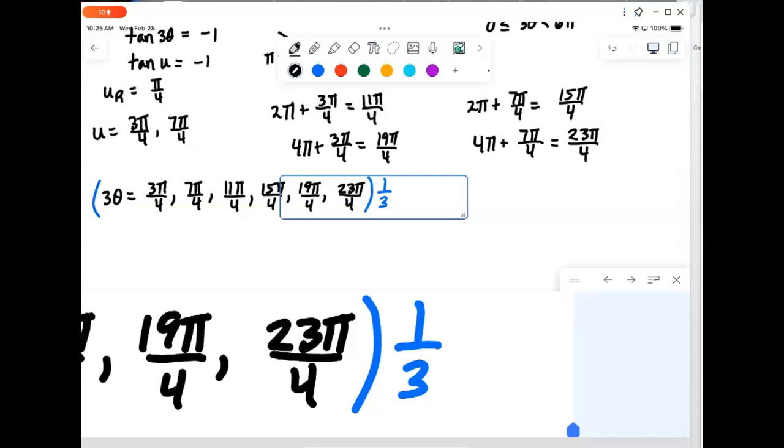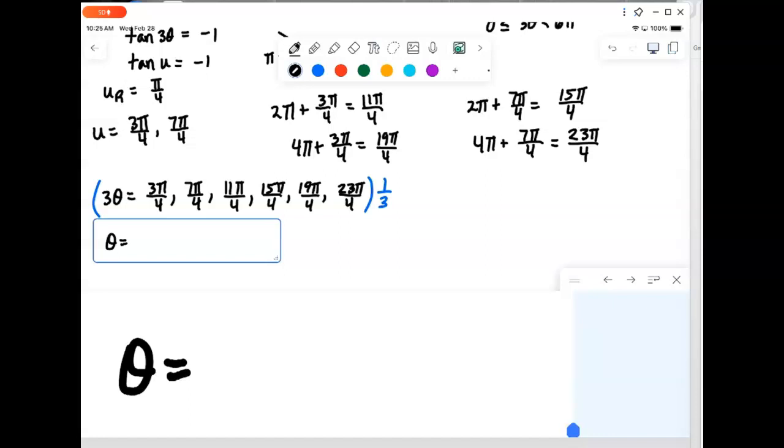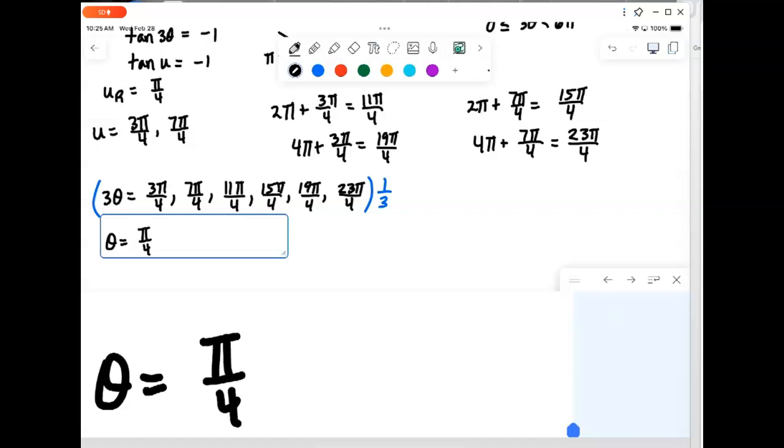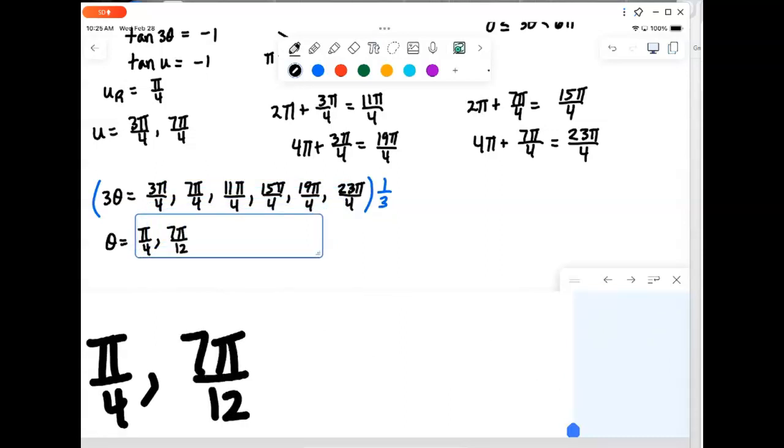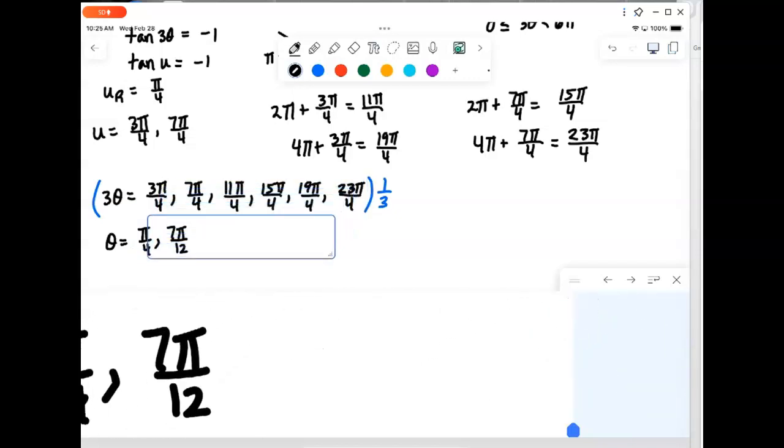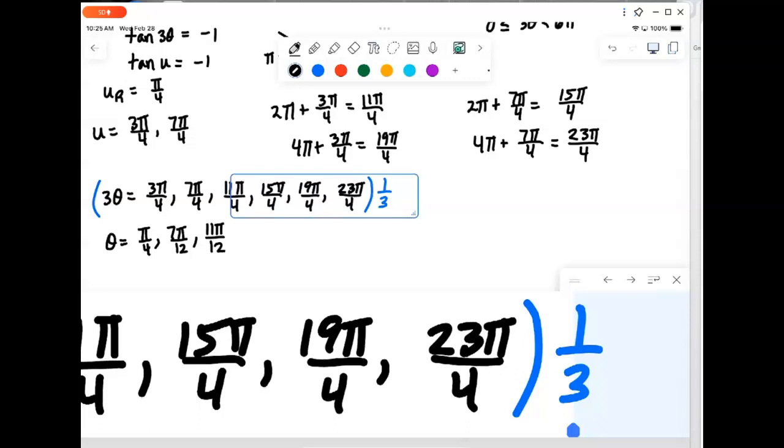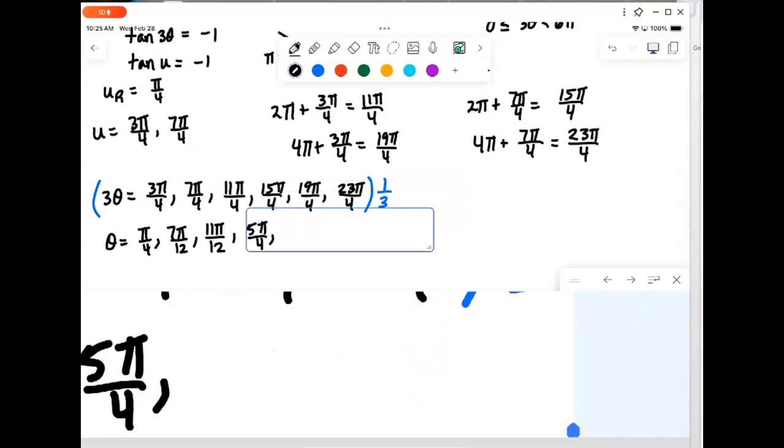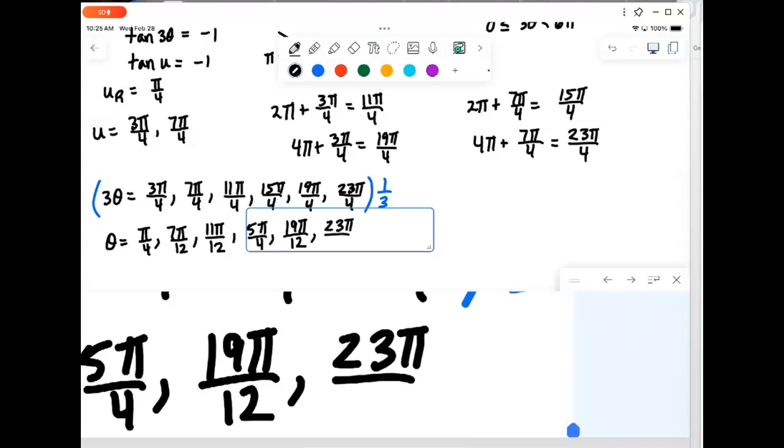And then, we'll just go through and simplify to get our answers. So, 1 third times 3 pi over 4, the 3's will cancel out. And, we'll just get pi over 4. 1 third and 7 pi over 4 will be 7 pi over 12. And then, 11 pi over 12. And then, we'll get to the 15. The 3 and the 15 will cancel. We'll get 5 pi over 4. And then, we'll keep going. And one-third and 19 pi over 4 would be 19 pi over 12. And we finish up with 23 pi over 12 as our last answer there.